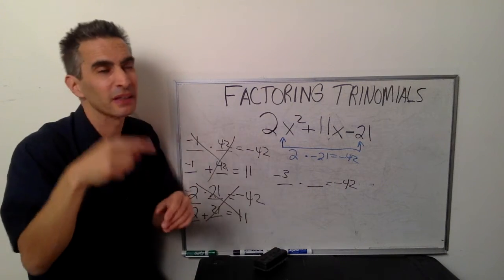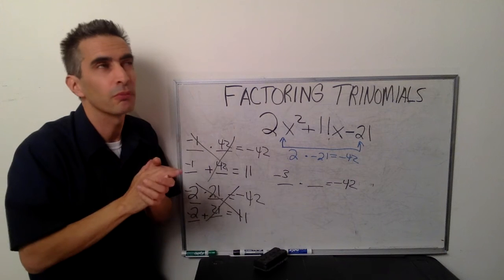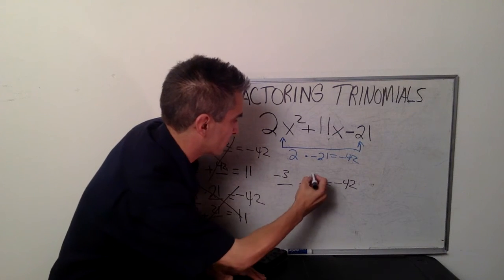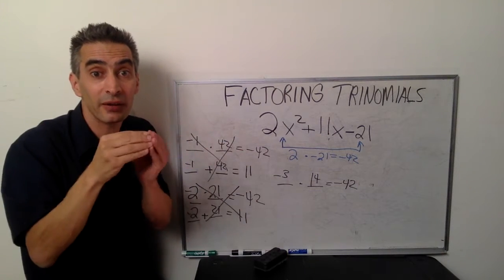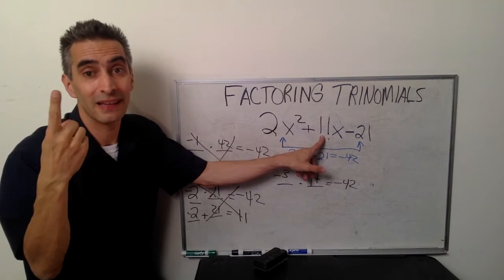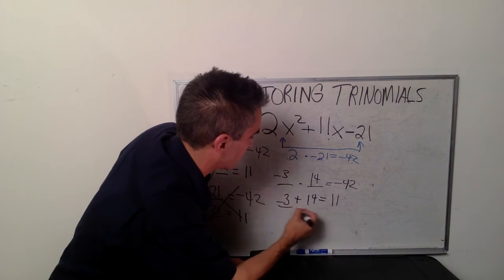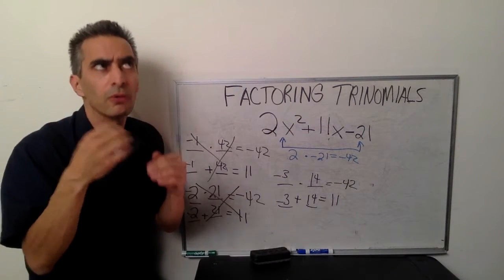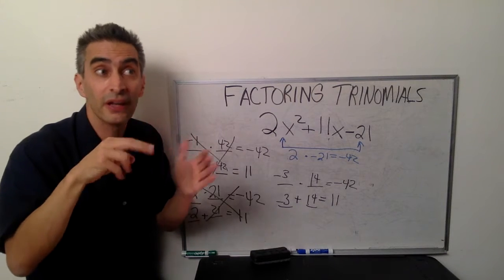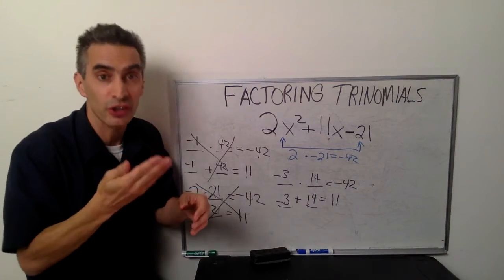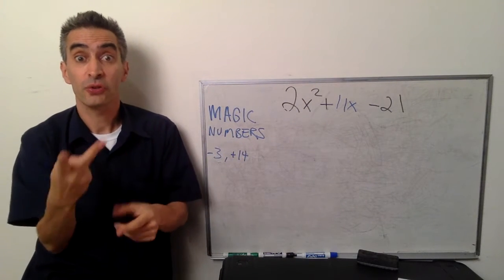So now we're going to try negative 3. Negative 3 times 14 equals negative 42. And negative 3 plus 14 equals 11. Yes! That means those two numbers are our magic numbers — negative 3 and 14.